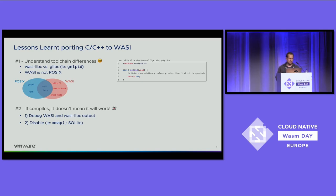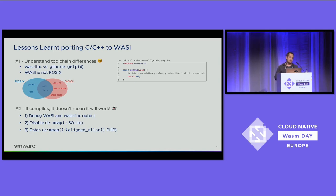Fortunately for us, disabling mmap in SQLite was easy, because SQLite was designed to not use it at the cost of using a less performant journaling method. But it would work. And finally, if you cannot disable it, you should really try to patch it. That was something we found not in SQLite, but in PHP, in the interpreter. You cannot disable the interpreter because it's part of the core function. So we had to work around and patch it with a different way to get aligned memory.